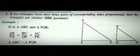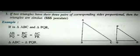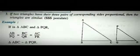Next is the SSS postulate. If all three sides are in proportion — AB by PQ equal to BC by QR equal to AC by PR — then you can also say the triangles are similar.